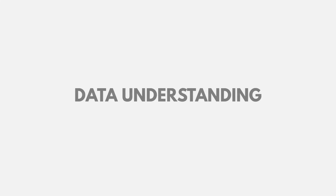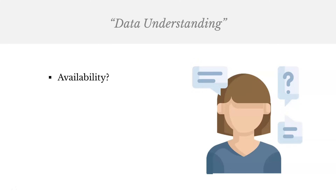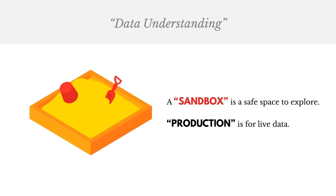The next phase is data understanding. Here we look at what data we have and what data we need, and try to cover any gaps. When we get the data, we ask questions like: what's the availability, the quality, the granularity — how deep or detailed does it go — and the frequency, how often does it get updated? As we explore our data, we often use a sandbox, a safe space so we don't accidentally mess up production, where all the live data is.